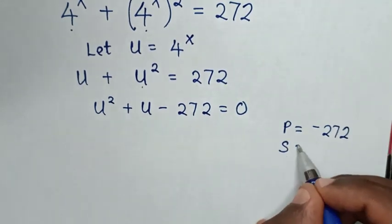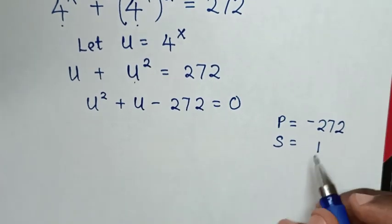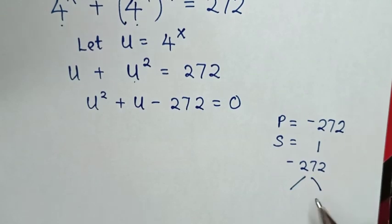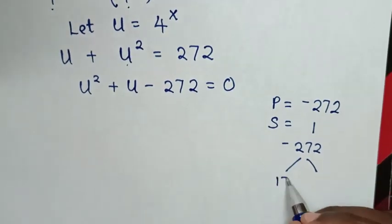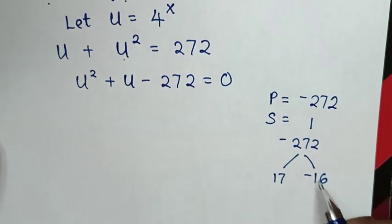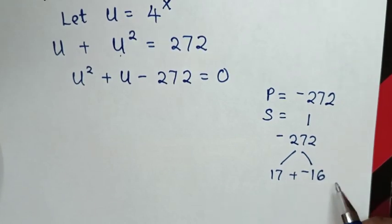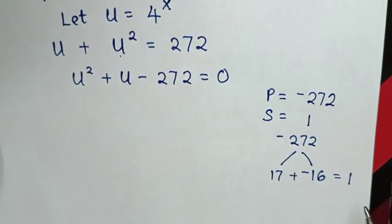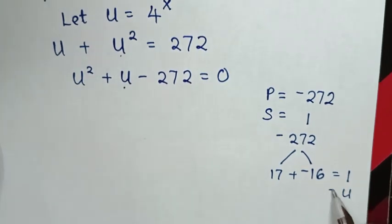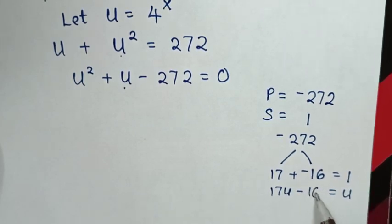The sum equals the coefficient of u, which is 1. To get a product of negative 272 and a sum of 1, the two factors are 17 and negative 16, because 17 times negative 16 equals negative 272, and 17 plus negative 16 equals 1. So we split the middle term into 17u minus 16u.